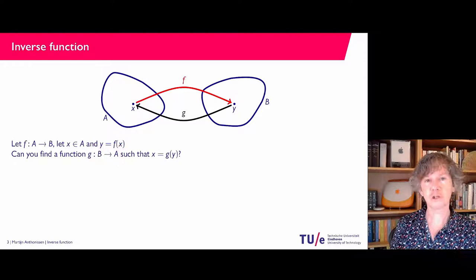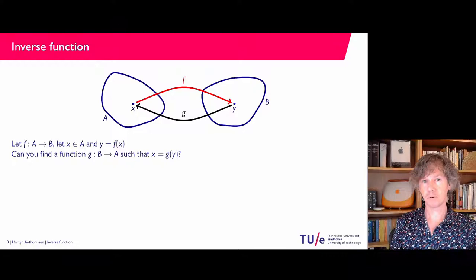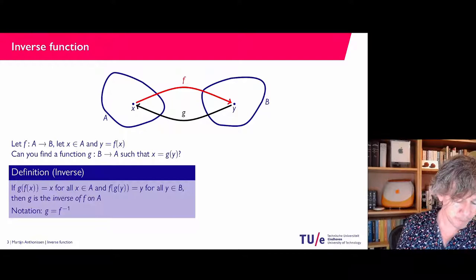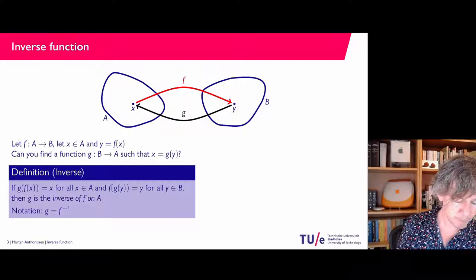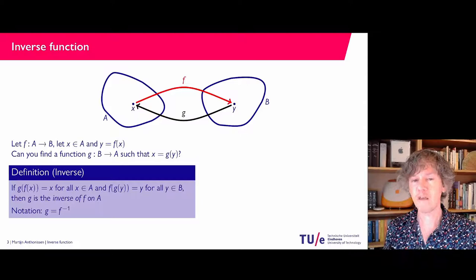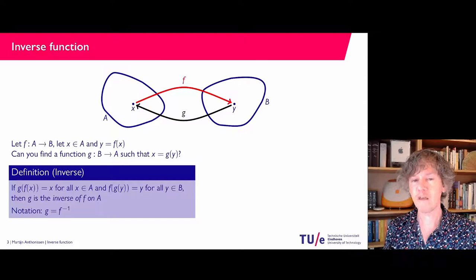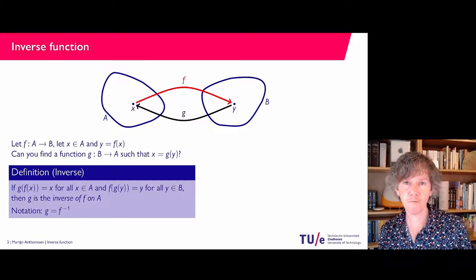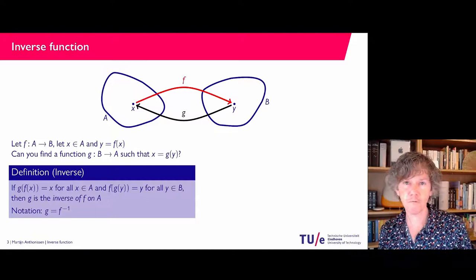For those types of functions you could also go back — you could take the phone number and find out who is the student that belongs to it. So you can find a function G that goes from set B to set A such that x equals G of y. This function is very special and of interest in many applications, and it is called the inverse function. The formal definition says: if you pick an x in the domain A, first apply F to get to y, then apply G to get back to x — and also the other way around. Then F and G are called each other's inverses.